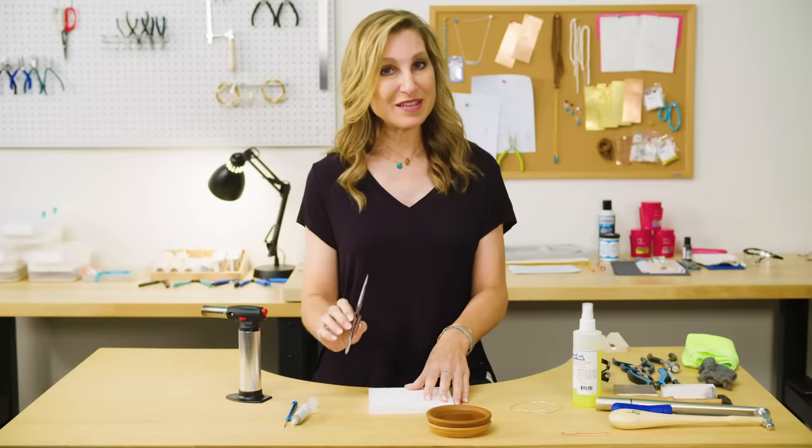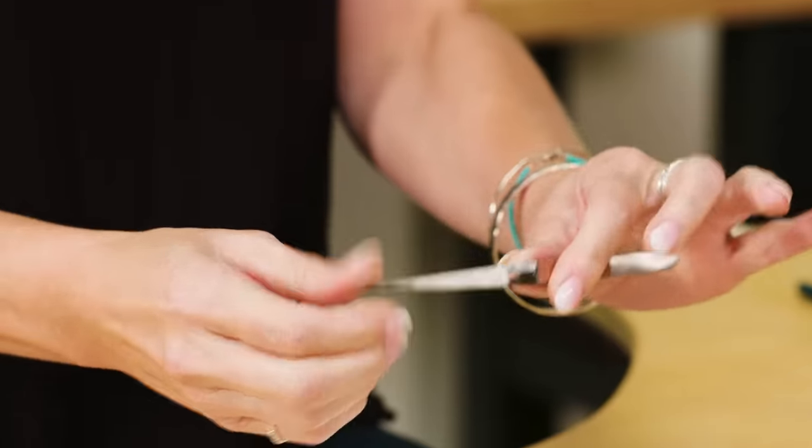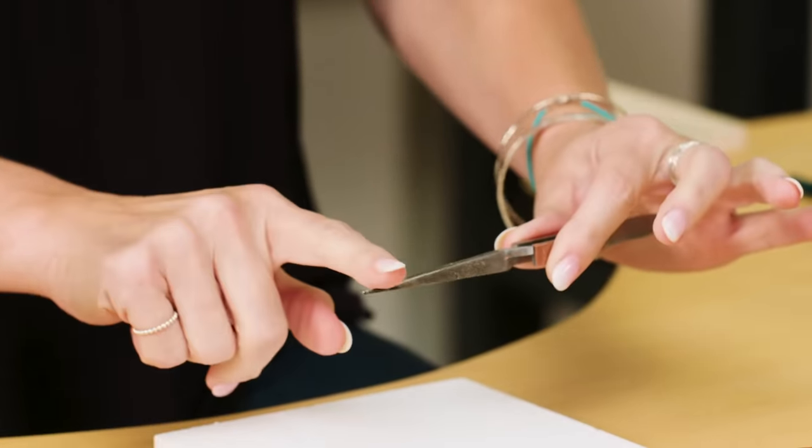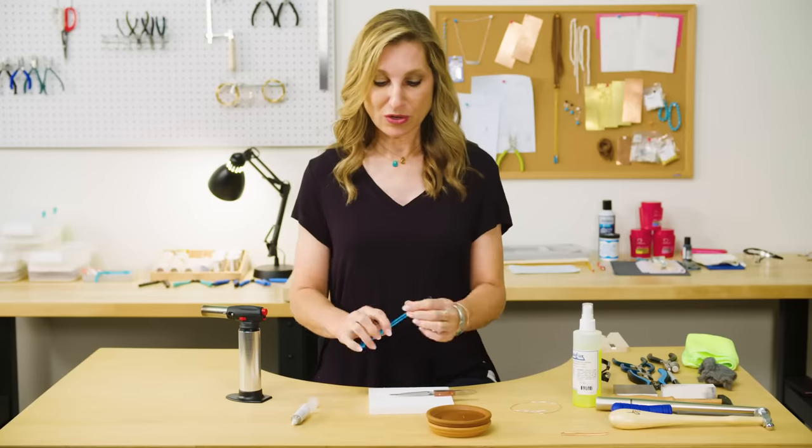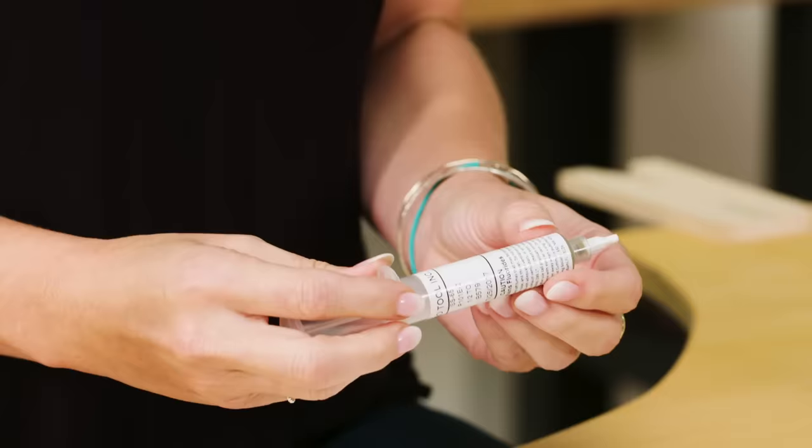You're also going to need something to keep yourself from burning your fingers. We're going to hold our metal in this cross-lock tweezer. It opens and closes like that, so we can put our metal in here and set that on there without touching it while it's hot. You're also going to need a soldering pick and solder.